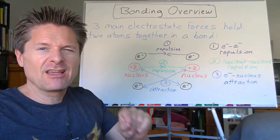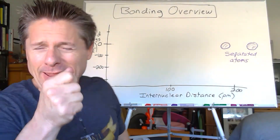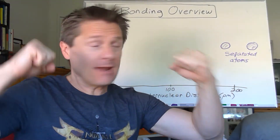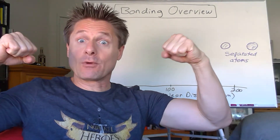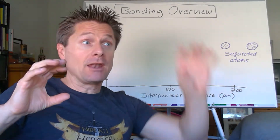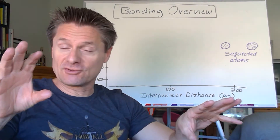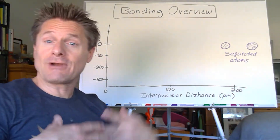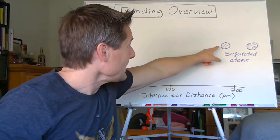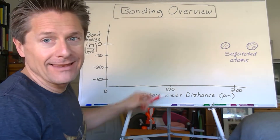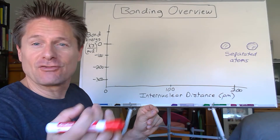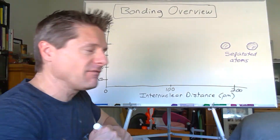Let's draw a graph of that and show where nature goes to the lowest energy state. Get your pens or pencils out. We've got two separated atoms and we're going to bring them together and look at the interplay between electron-electron repulsions, nucleus-nucleus repulsions, and electron-nucleus attractions. Let's start them out at infinite distance and define that as zero energy - similar to how we defined a detached electron as zero energy in the Bohr model. That's our reference state.